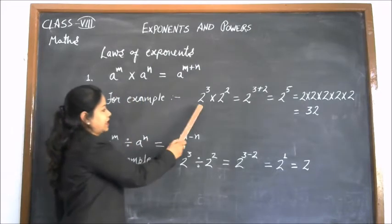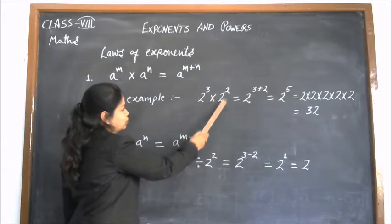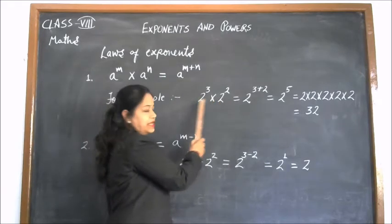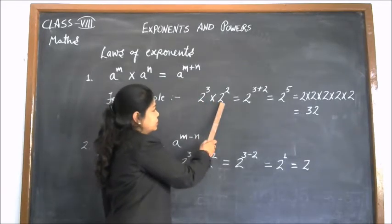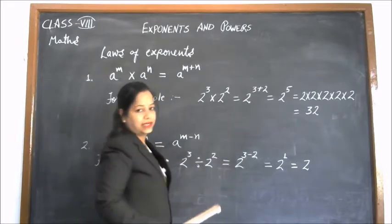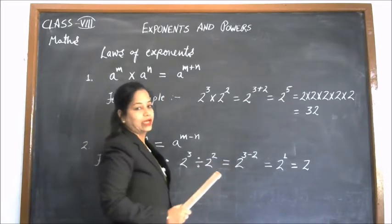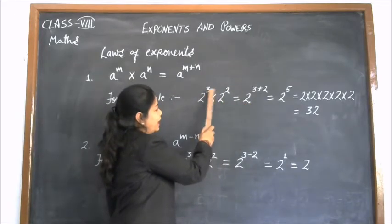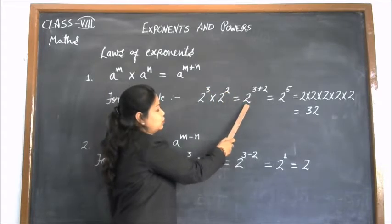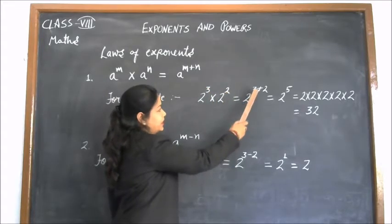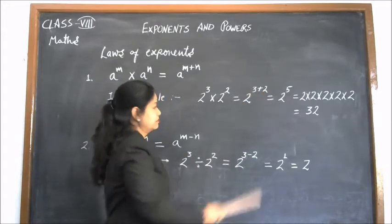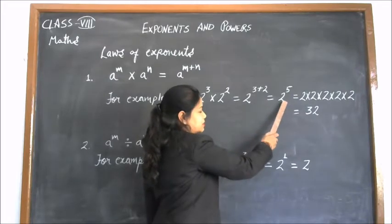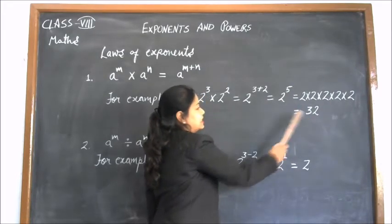For example, we have 2 to the power 3 into 2 to the power 2. We have to multiply these two numbers. We have the same base 2, so we write 2 only one time. There is no need to write 2 two times. We add the powers: 2 to the power 3 plus 2, which means 2 to the power 5. And 2 to the power 5 is 32.